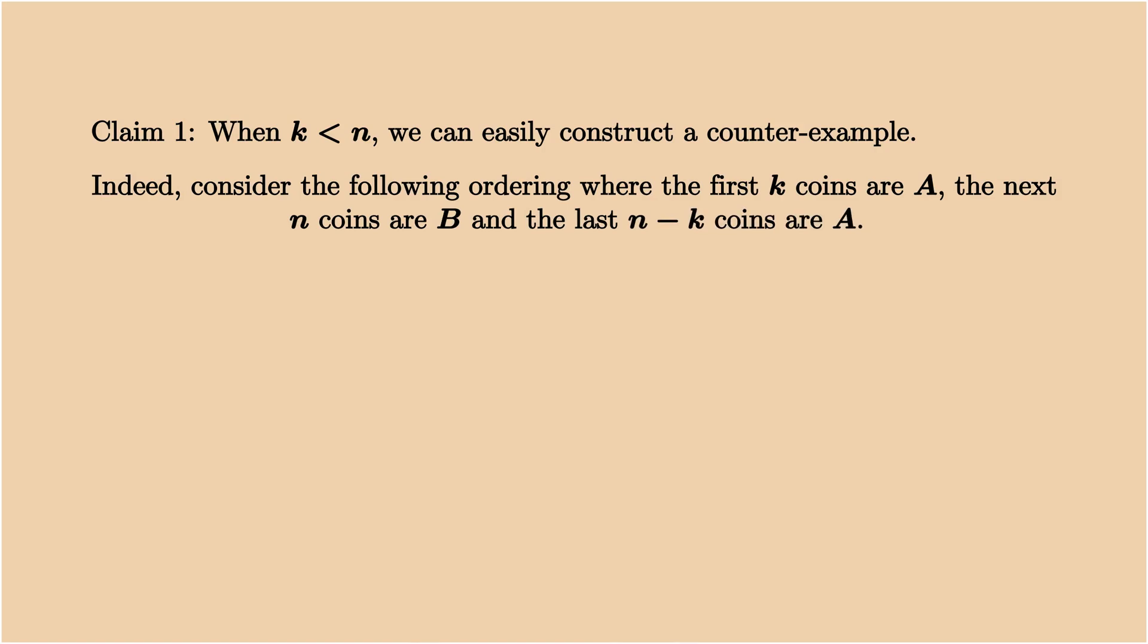Let me start with some simple observations. First, when k is smaller than n, we can easily construct counter examples. Indeed, consider the case where the first k coins are of type A, and the next n coins are of type B, and finally the last n-k coins are again of type A.